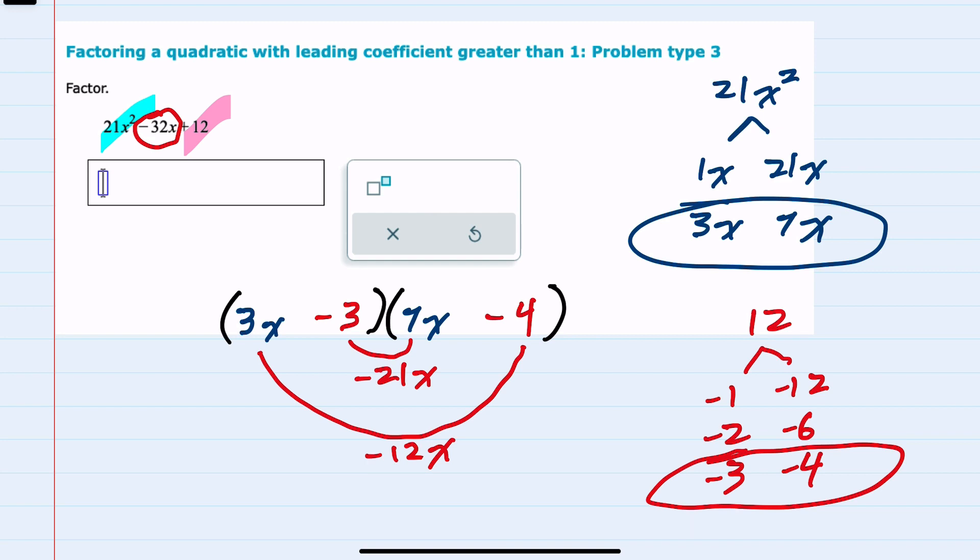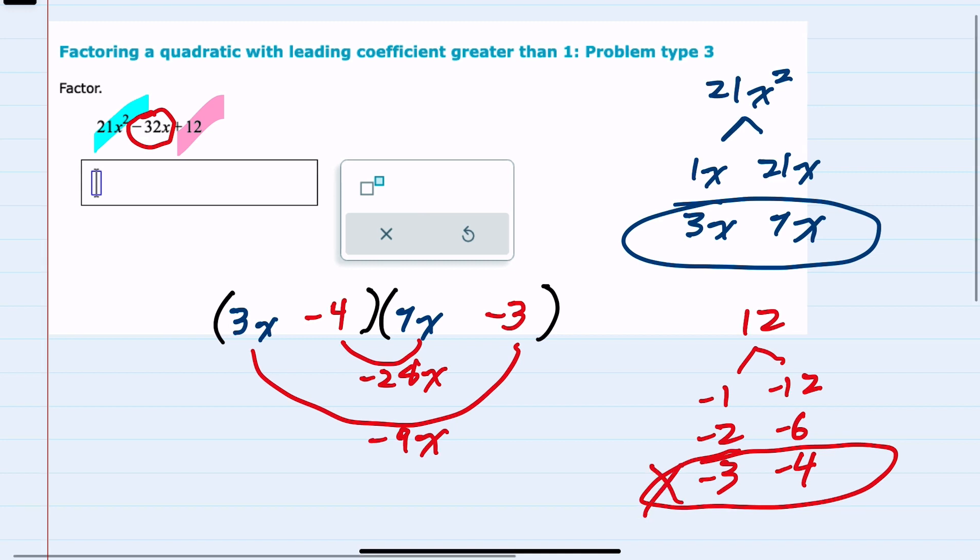Before giving up on the negative 3 and 4 though, I should switch them and try this combination. Negative 4 times 7x is negative 28x, negative 3 times the 3x is negative 9x, giving us a negative 37x. So again, not the negative 32x I'm looking for. This combination did not work, so I'll move on and try